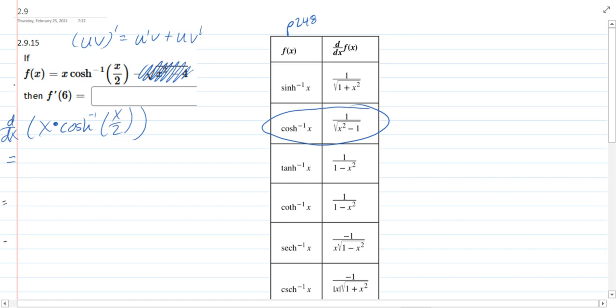Okay, derivative of x is 1, and you just copy the second part, cosh inverse x over 2, plus copy over the first part, which is x. Now derivative of cosh inverse is here on the table. It's 1 over the square root.